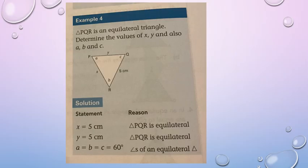Triangle PQR is an equilateral triangle — determine the values of x, y, and also A, B, and C. Immediately you can see that A, B, and C are each equal to 60 degrees, because it's been given that this is an equilateral triangle, and all angle sizes in an equilateral triangle are 60 degrees. Also, all sides are equal, so x and y are also equal to 5 centimeters, because triangle PQR is equilateral.